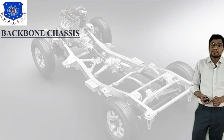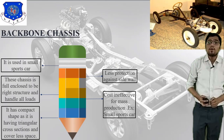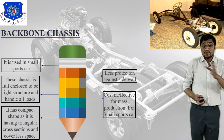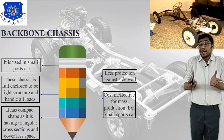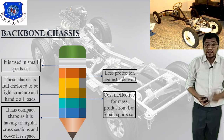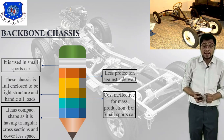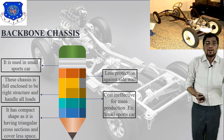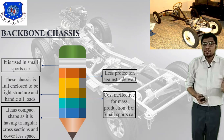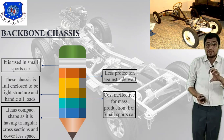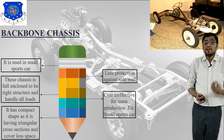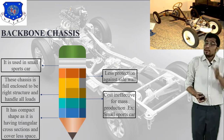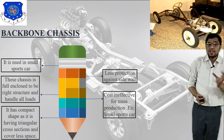The third type is the backbone chassis. As you can see in the image, it is used in small sports cars. This chassis is a full and closed tube structure that handles all the load. It has a compact shape with a triangular cross-section, covering less space compared to monocoque and ladder chassis. However, it provides less protection against side impact, and it is cost-ineffective for mass production.